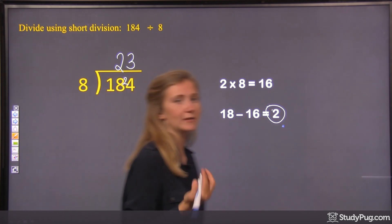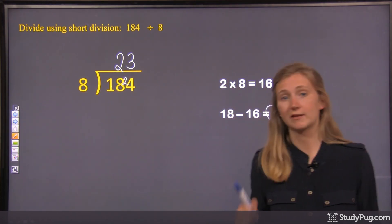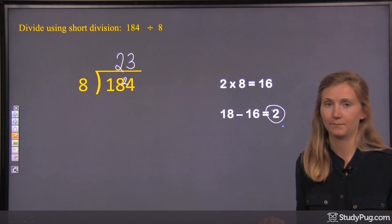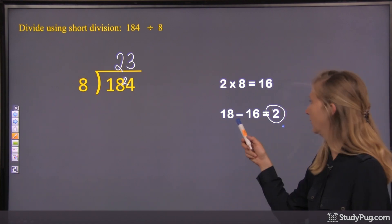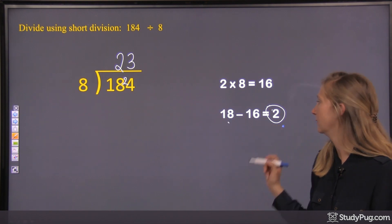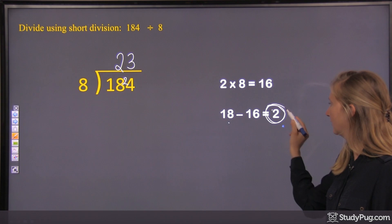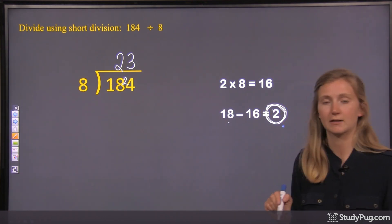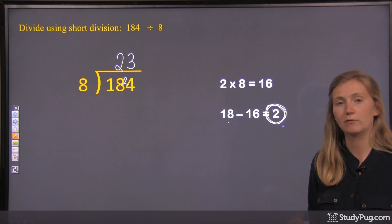So actually the steps of short division are the same as long division, but we just don't write down all of them. Okay? We don't write down the subtraction, or we don't do the bringing down. We just do the subtraction in our head, and then take what's left over, and put it in front of the next place digit over. All right? And then we move on to that division.